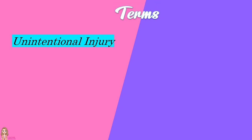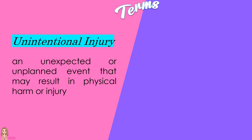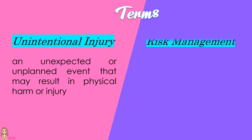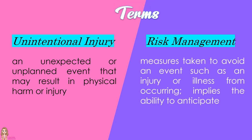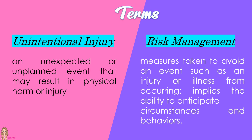Let us define the following terms. An unintentional injury means an unexpected or unplanned event that may result in physical harm or injury. Risk management means measures taken to avoid an event such as an injury or illness from occurring — it implies the ability to anticipate circumstances and behaviors.